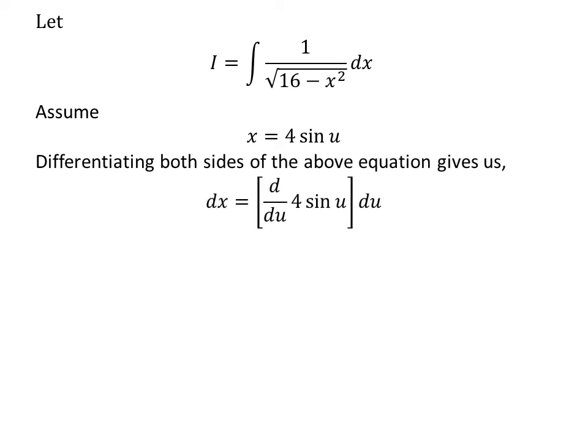Let us find the value of differential of x in terms of u. Taking differential of both sides of the equation gives us differential of x is equal to derivative of 4 times sine of u with respect to u times differential of u. We know the derivative of sine of u is cosine of u. So, differential of x is equal to 4 times cosine of u times differential of u.